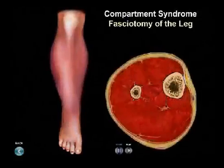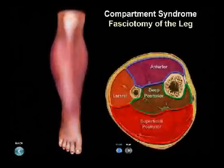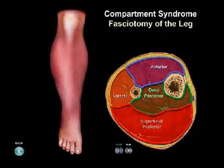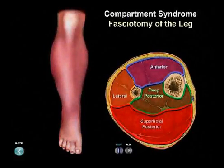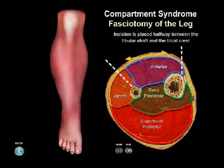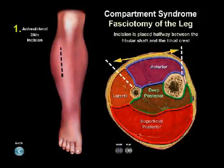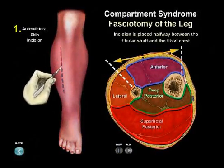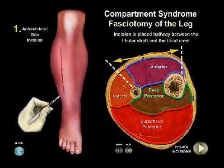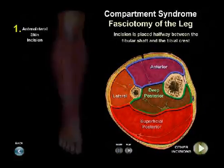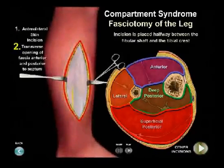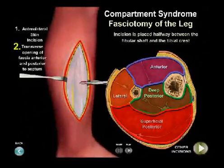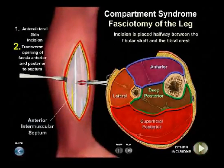Fasciotomy is the treatment of choice for compartment syndrome. Complete decompression of the lower leg is accomplished through a double incision for compartment fasciotomy. The first incision is placed halfway between the fibular shaft and the tibial crest. The fascia anterior and posterior to the septum is opened transversely.